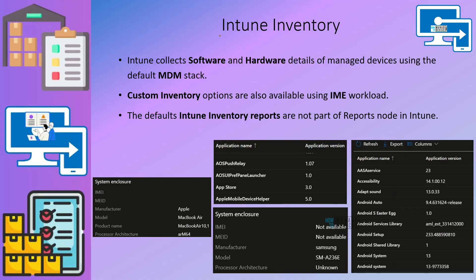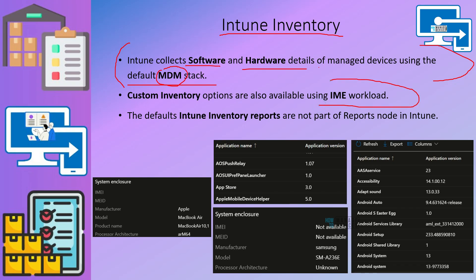Let's understand what Intune inventory is. Intune can collect software and hardware details from managed devices using the default MDM stack — that is the default inventory available in Intune. There are custom inventory options available, but not from the Microsoft side. Custom inventory uses the IME workload. IME is the additional client agent which is installed on most Intune managed devices, specifically Windows devices.